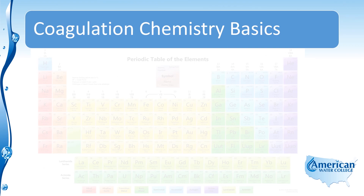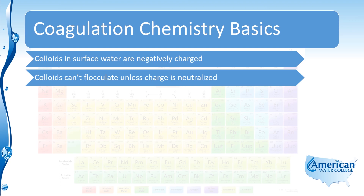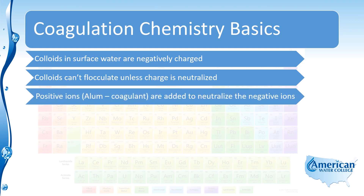Let's talk about some coagulation chemistry basics. Colloids in surface water are negatively charged, so when the water arrives at the treatment plant it's full of non-settlable particles called colloids that carry a negative charge. They can't flocculate together unless that charge is neutralized because of a force called zeta potential. To address this, we add positive ions to the water. The most common coagulant used is aluminum sulfate, although there are several others — ferric chloride, ferrous sulfate, and some other polyelectrolytes. For our discussion here, we'll focus on using alum to add positive ions that neutralize the negative ions.